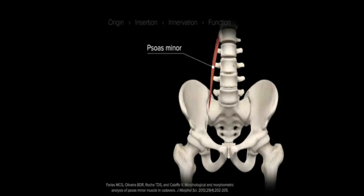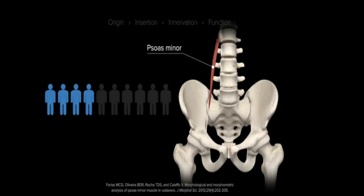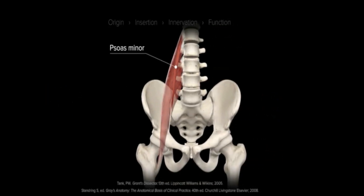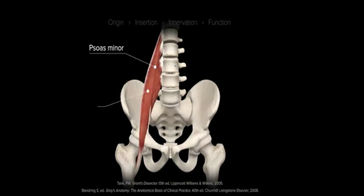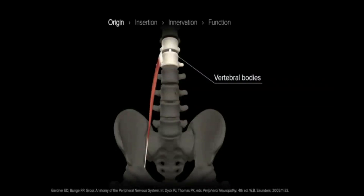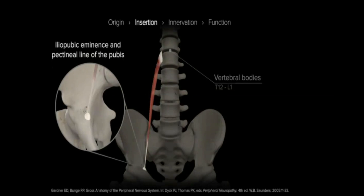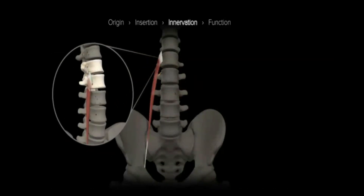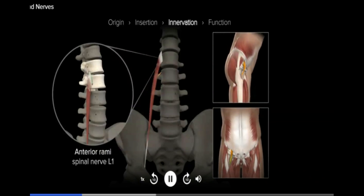The psoas minor muscle is variably present in patients and may only be identified in approximately 40% of the population. It is positioned anterior and medial to the psoas major and is both long and thin. When present, this muscle originates along the vertebral bodies of T12 to L1 and inserts distally at the iliopubic eminence and pectineal line of the pubis. Like the psoas major, the psoas minor is innervated through the anterior rami of spinal nerve L1 and functions to assist in forward and lateral flexion of the trunk.